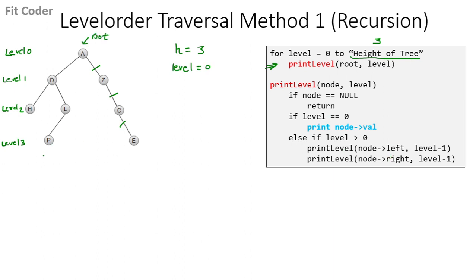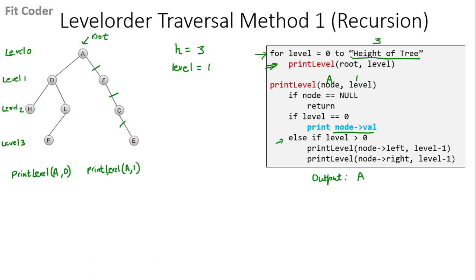The first call is for level equal to 0 — we call print level and pass node A and level 0. The node is A and the level is 0; we check if node is null — it is not — then we check if level is 0, so we print the value of node which is A. Then we come back to the for loop and now level is 1, so we call print level for A and 1.